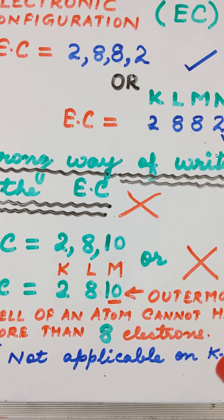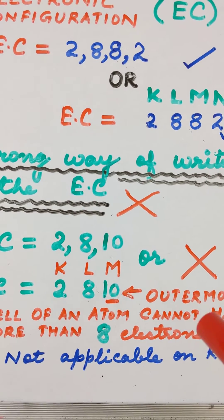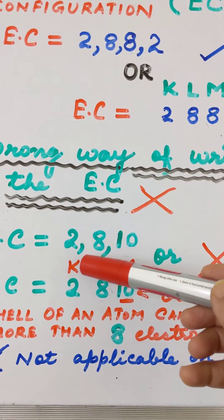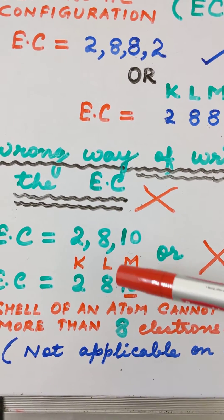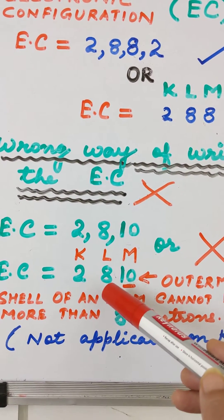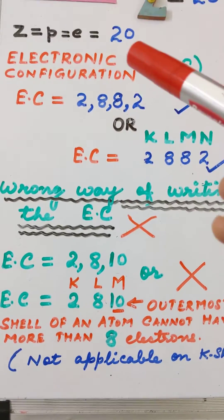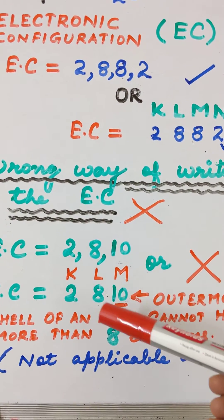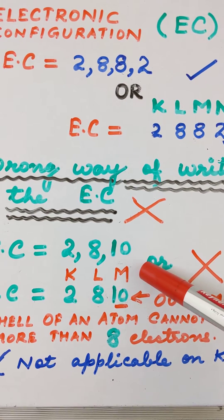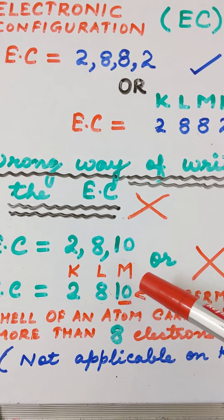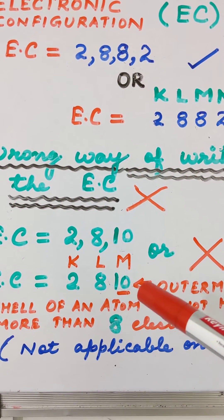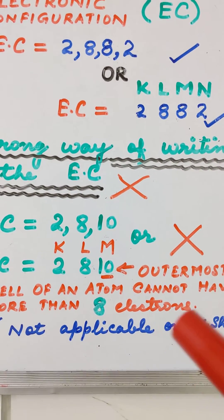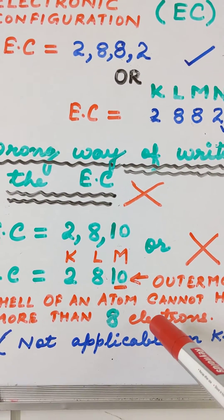Now this is very important, since here we need to apply this third rule. According to this rule, we put 2 electrons in the K shell and 8 electrons in the L shell, which totals up to 10. We are left with 10 more electrons in the case of calcium. Now if we put all these 10 electrons in the M shell, this would mean the outermost shell is having 10 electrons. But according to the third rule, the outermost shell cannot have more than 8 electrons in it.